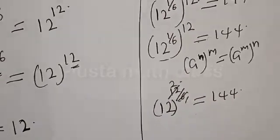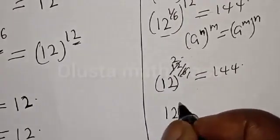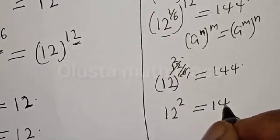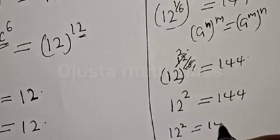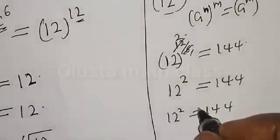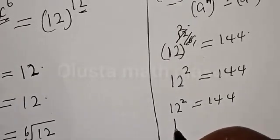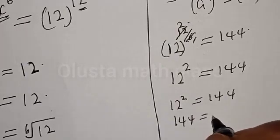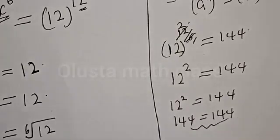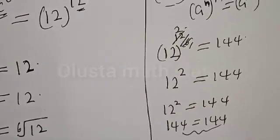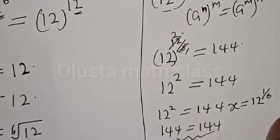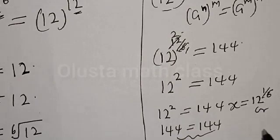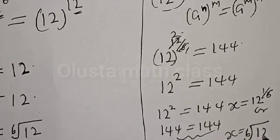Therefore we have 12 squared must be equal to 144. Remember that 12 squared is equal to 144. Therefore the left hand side equals the right hand side: 144 is equal to 144. We have satisfied the given equation, confirming that s is equal to 12 raised to power 1 divided by 6, or s equals the 6th root of 12.